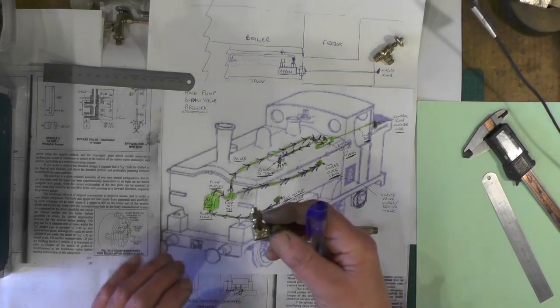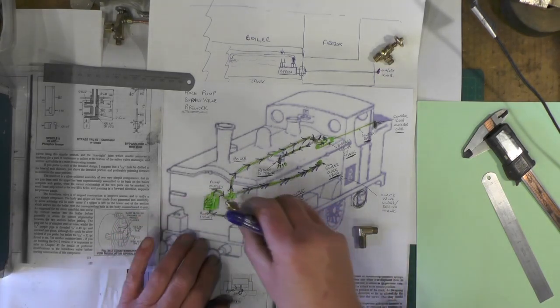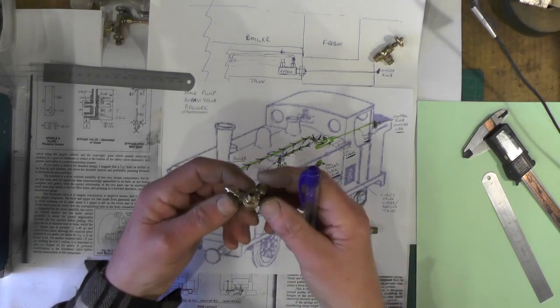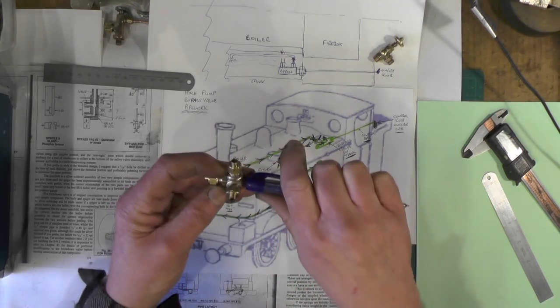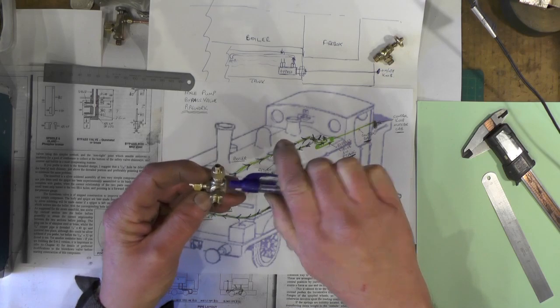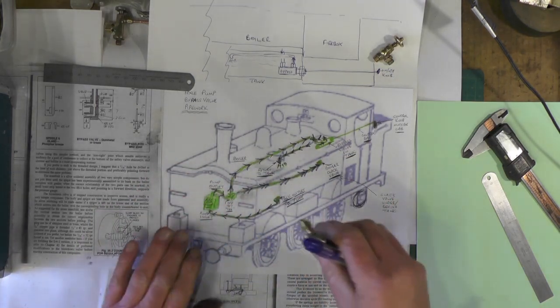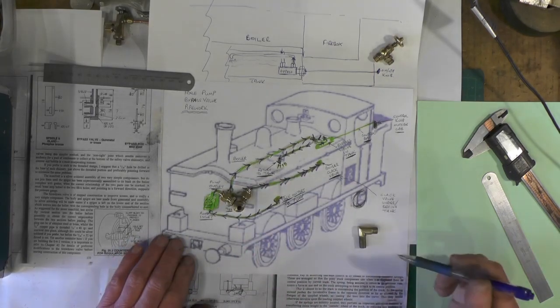I've also had to make this offset T to divide the pipe work up. So that's not a normal T like you would normally get. I've made it like offset because I want it to go in a certain position with my pipe.